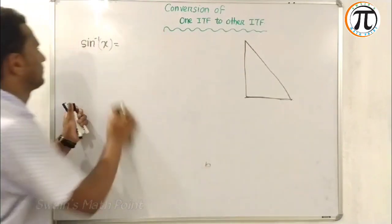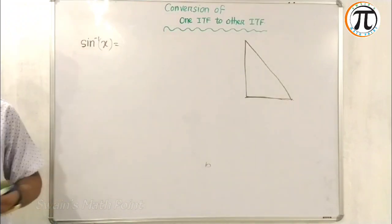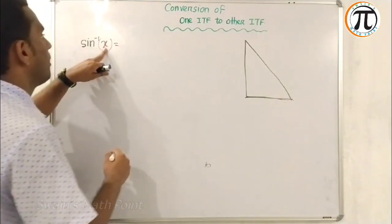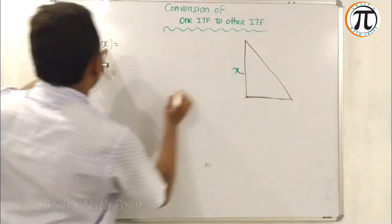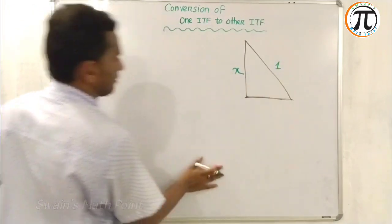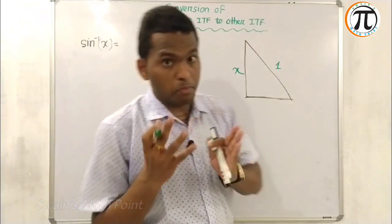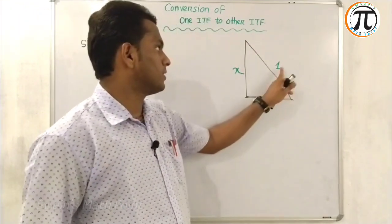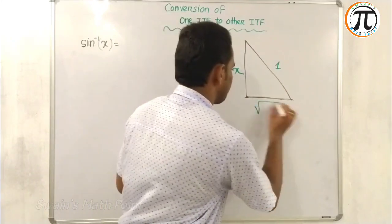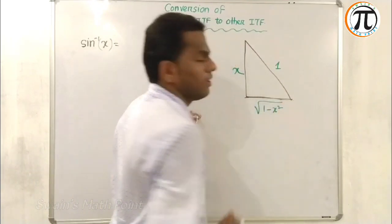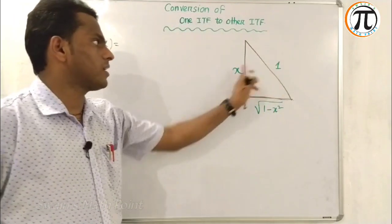So sine inverse X, where P equals X and H equals 1, we have P equals X by 1. According to Pythagoras theorem, B will be the square root of H squared minus P squared, which is the square root of 1 squared minus X squared.